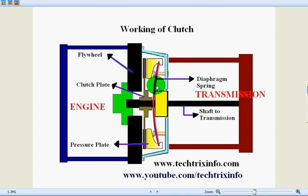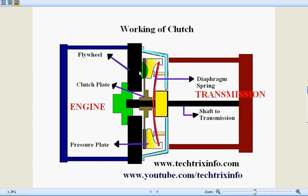The purpose of the clutch is to disengage the engine from the transmission and to smoothly engage the engine with the transmission. As shown in the figure, when the engine is not linked with the transmission, the clutch pedal is engaged. At that point, the clutch plate is not linked with the flywheel — the flywheel is marked in black — meaning the drive from the engine will not be carried by the clutch towards the transmission. This happens when the foot pedal is pressed.